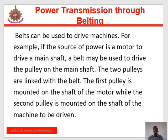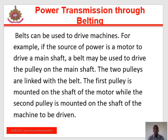Power transmission through belt. Belts can be used to drive machines. For example, if the source of power is a motor to drive a main shaft, a belt may be used to drive the pulley in the main shaft. The two pulleys are linked with the belt. The first pulley is mounted on the shaft of the motor, while the second pulley is mounted on the shaft of the machine to be driven. Thus, the pulley on the motor shaft is the driver, while the pulley on the machine shaft is the driven.